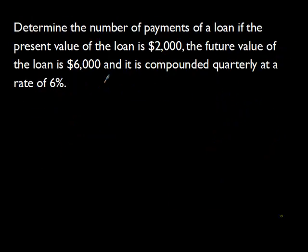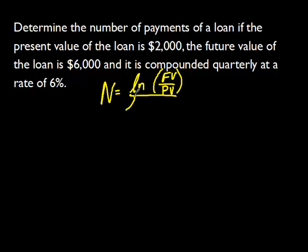Our third problem today reads: determine the number of payments of a loan if the present value of the loan is $2,000, the future value of the loan is $6,000, and it is compounded quarterly at a rate of 6%. If we want to find the total number of payments, it's represented by capital N. Capital N is the total number of payments. It's usually found by taking lowercase n multiplied by t.